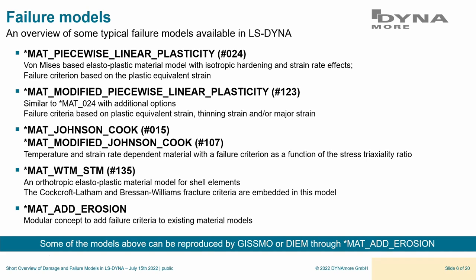The Johnson-Cook models are also very popular, especially in aviation, where you can make failure dependent on strain rate, temperature, and stress triaxiality. There are other criteria like the Cockroft-Latham criterion or the Bresciani-Williams criterion, embedded for instance in MAT135. Finally, MAT_ADD_EROSION is a modern concept allowing you to add a failure criterion to existing material models. Importantly, some criteria can also be reproduced by GISSMO or MAT_ADD_EROSION, giving more flexibility.